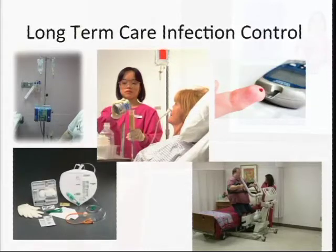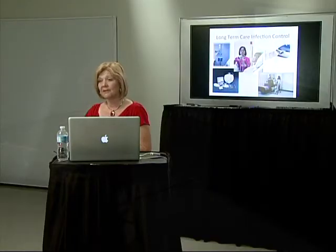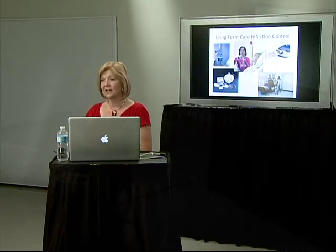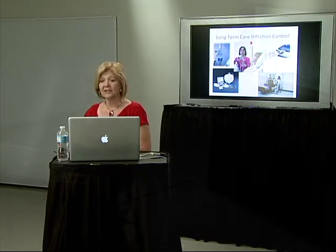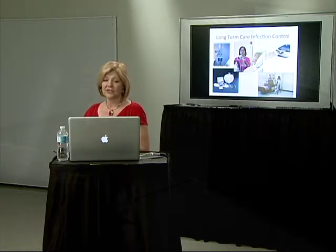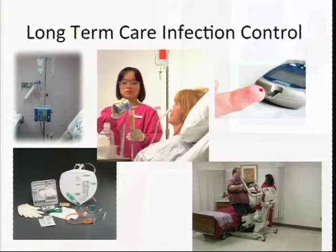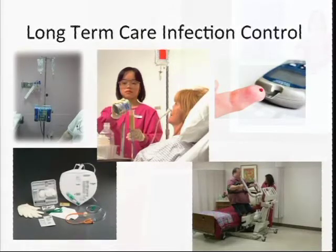I've got some pictures here of things we look for in long-term care infection control when we're doing our tour and walking around your building. Some of the things that raise a flag are IVs, G-tubes, and glucometers — glucometers are a big one. Glucometers have to be cleaned with a special cleansing agent designed for that, not an alcohol wipe, and they should be cleaned between each resident. Ideally, every resident needing a glucometer should have their own to avoid exposing anyone to blood-borne pathogens. Foley catheters are always looked at, as well as shared equipment like mechanical lifts. Staff who do peri care and then move a mechanical lift from one room to another carry bacteria right along the hall into the next resident's room.